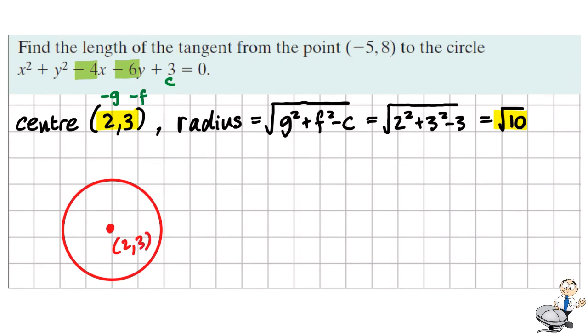Let's draw a little diagram of our circle. So we have a circle with a center of (2, 3) and we have a point (-5, 8). Maybe the tangents might look something like this. Now both of these tangents length would be the same length because of symmetry.